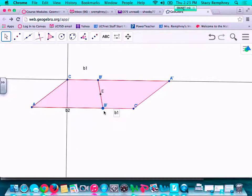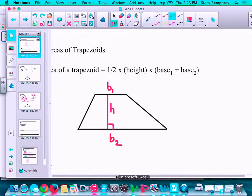So my area of this entire parallelogram would be the height times base 1 plus base 2, because that makes the entire base of the parallelogram. But remember, I'm not really looking for the area of this parallelogram. I'm looking for the area of a trapezoid. So what would you do to that formula? Well, you would just divide it by 2, because the parallelogram is made of 2 trapezoids.